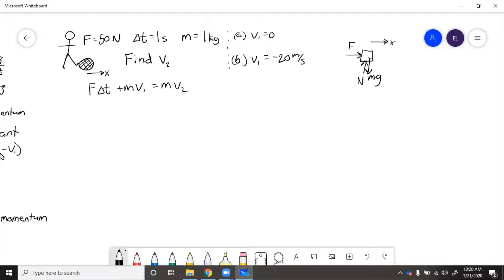So for a, the initial velocity is zero, then we just have F Δt equals m v2. So 50 times 1 equals 1 v2, which gives us 50 meters per second equals v2. So that is if the ball was still, and he applied 50 newton force over the one second time interval.